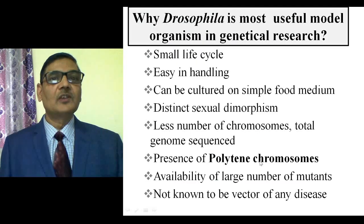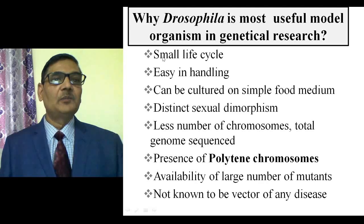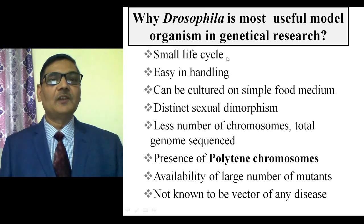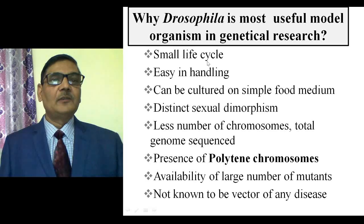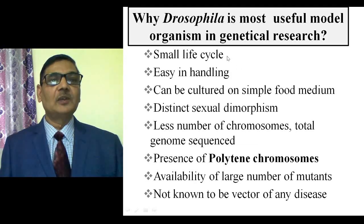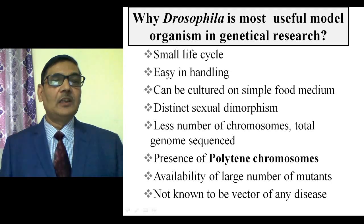Why is Drosophila the most useful model for genetical research? It is because of its small life cycle. When cultured in the laboratory, Drosophila flies complete their life cycle in about 10 to 11 days. During this time, one can observe the egg, larval stages, pupal stages, and adults emerging from pupae — all within 10 to 11 days when cultured at 25 degrees Celsius, a constant temperature required in laboratory conditions.